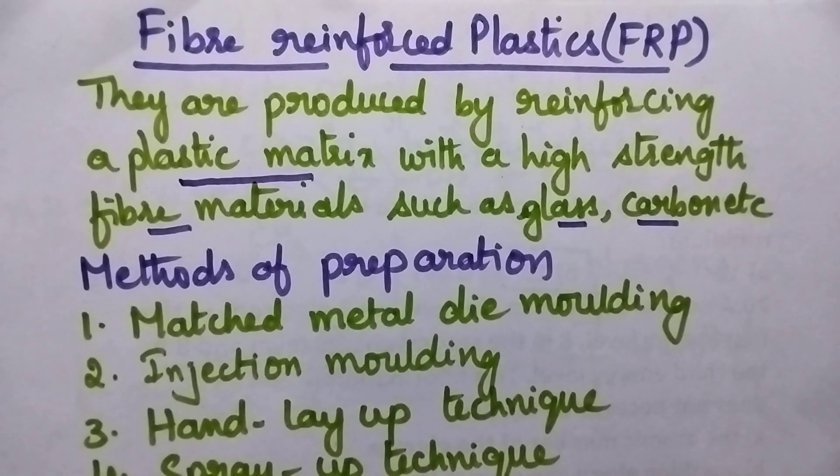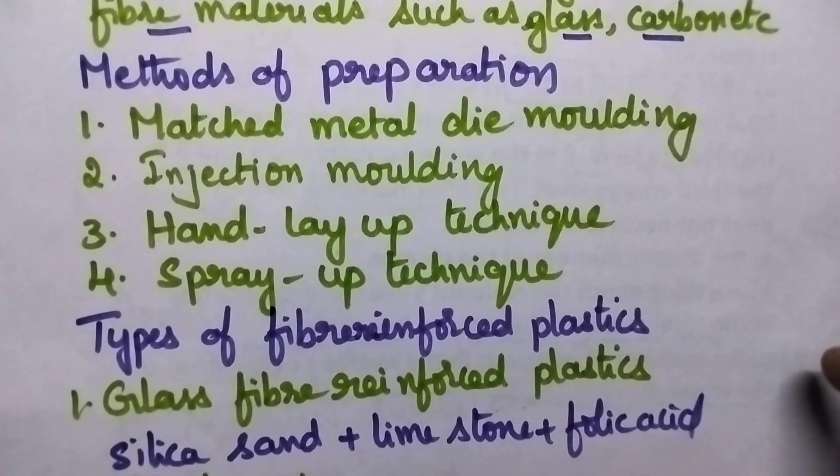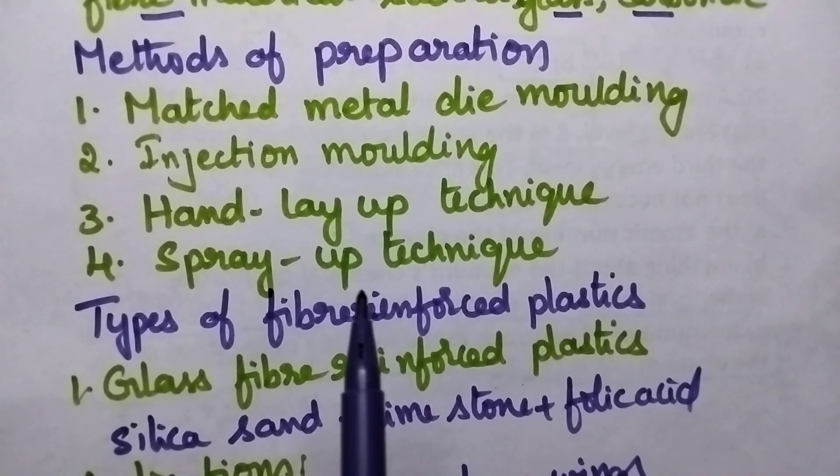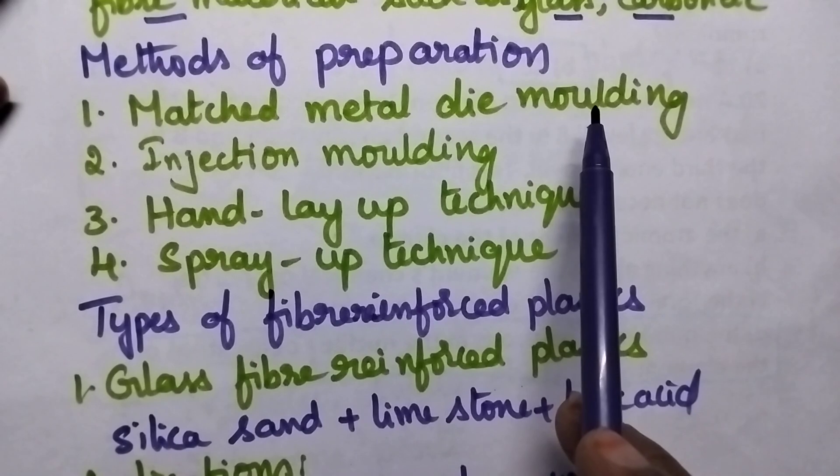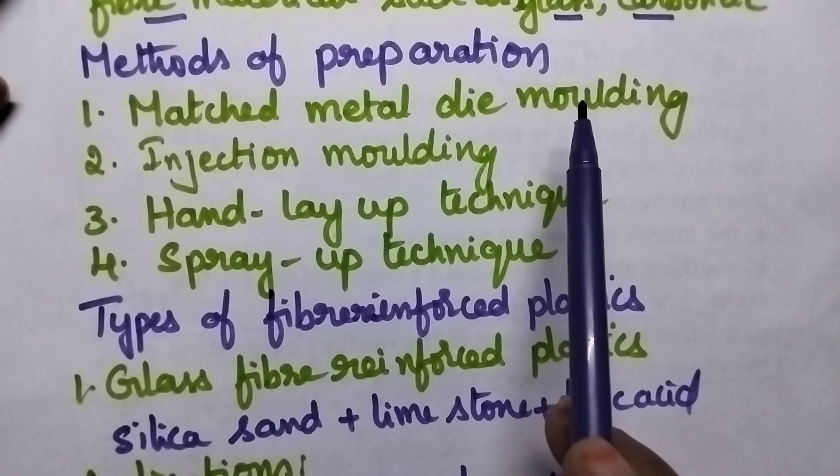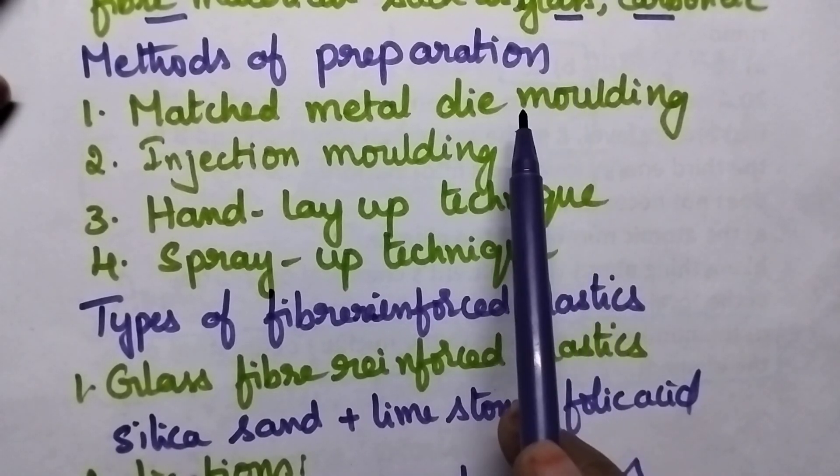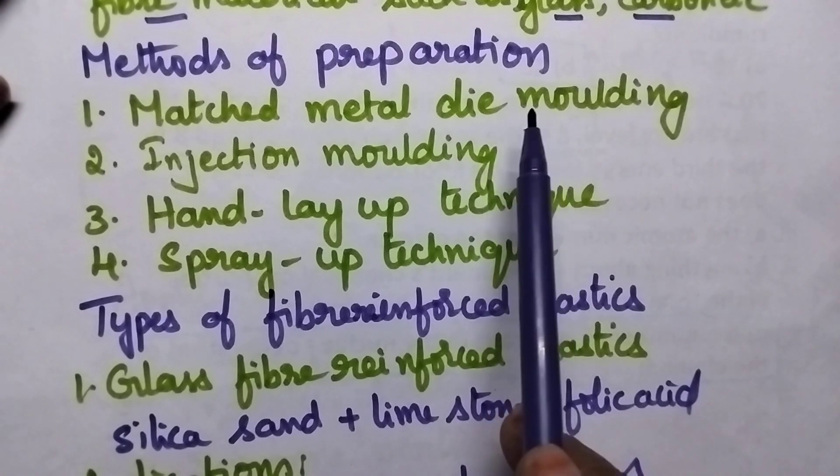Coming to the methods of preparation, they can be prepared using several methods. The most important methods include matched metal die molding, which is similar to compression molding.